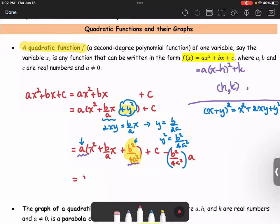This returns a(x + b/(2a))² plus the quantity c - b²/(4a).